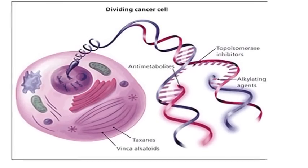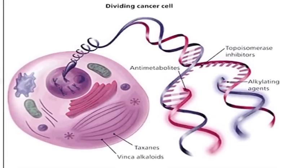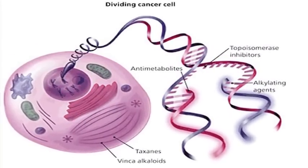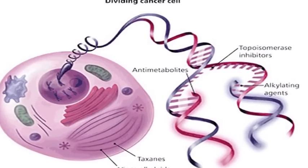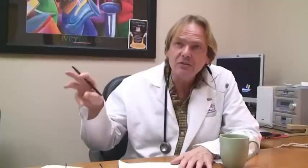Cancer cells, though, generally replicate much faster, so if we can find chemical agents that will affect the cancer cells more effectively than they do healthy cells, then that's the kind of chemical agents that we want to use for our cancer chemotherapy drugs.